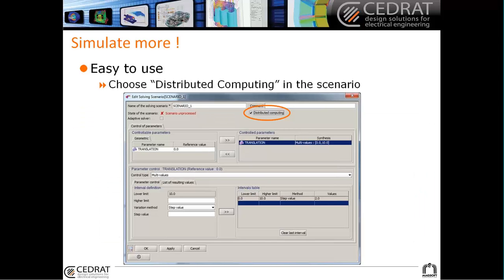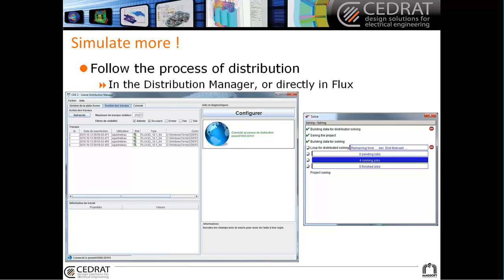It's very easy to use. When you are doing a parametric study, you are editing the scenario. And in the scenario, you just have to click here on distributed computing. Then Flux will distribute the computation. During the distribution, you can follow the distribution process directly in Flux. This is the solving window.